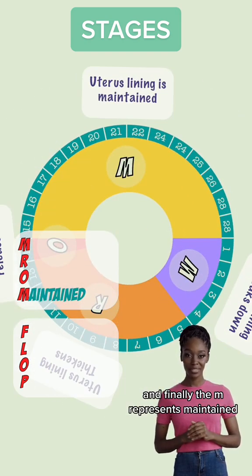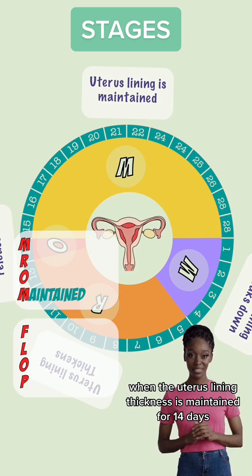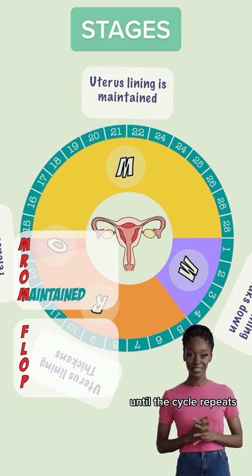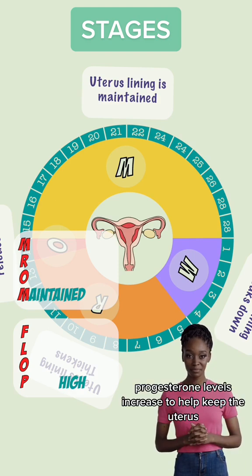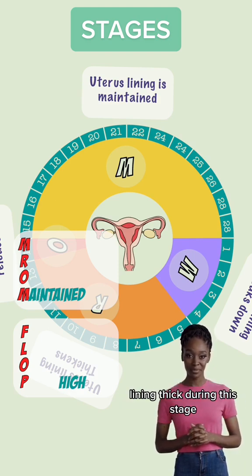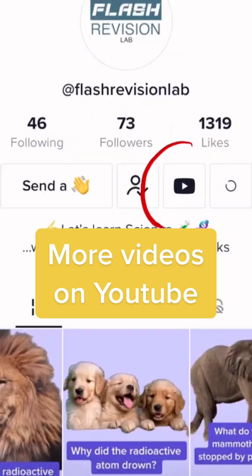And finally the M represents maintained, when the uterus lining thickness is maintained for 14 days, until the cycle repeats, if the egg isn't fertilized. Progesterone levels increase to help keep the uterus lining thick during this stage.